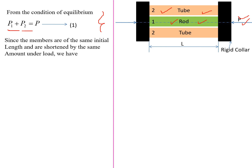Since the members are of the same initial length L, and the deformation under load must also be the same, the deformation in the rod (delta 1) equals the deformation in the tube (delta 2). Using the deformation formula delta = PL/AE, we get: P1·L1 / (A1·E1) = P2·L2 / (A2·E2). Let us call this Equation 2.